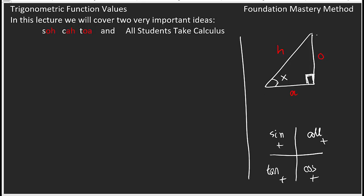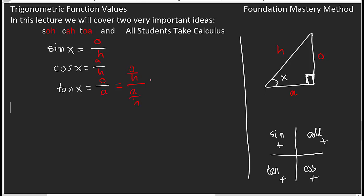If we take a right triangle, H is the hypotenuse, A is adjacent, and O is opposite with respect to angle X. Sine X will be opposite over hypotenuse, so we write O over H. Cosine X is adjacent over hypotenuse, so we write A over H. This is by definition. Tangent X will be O over A.